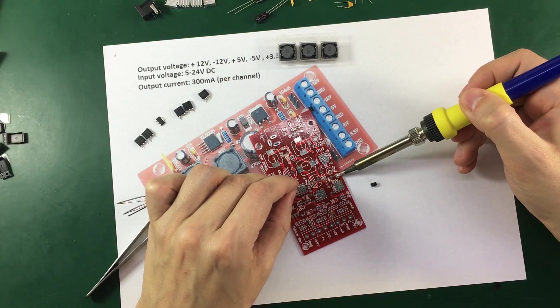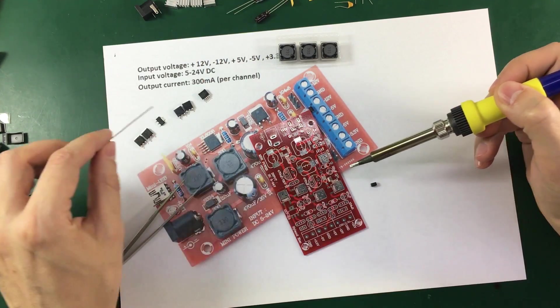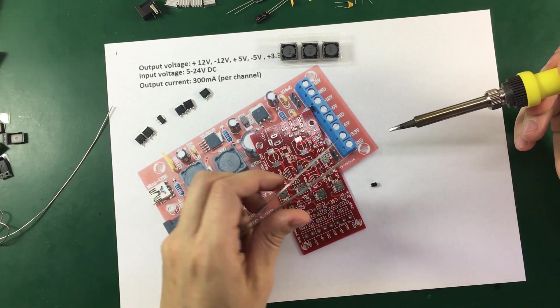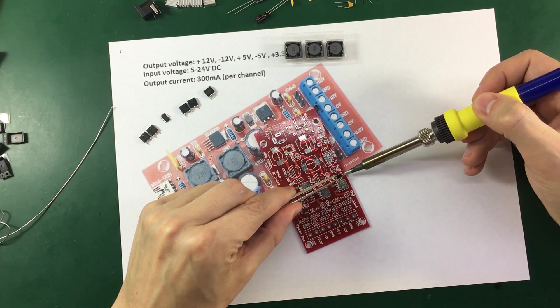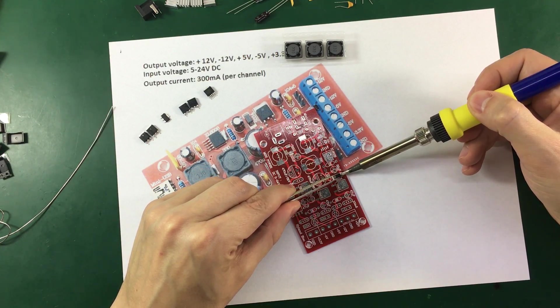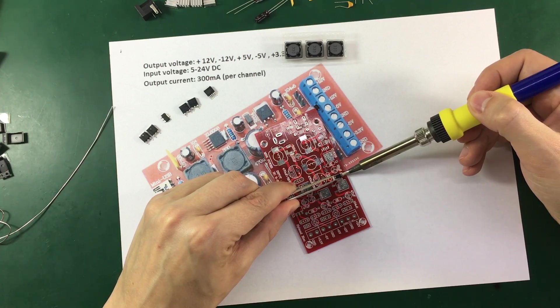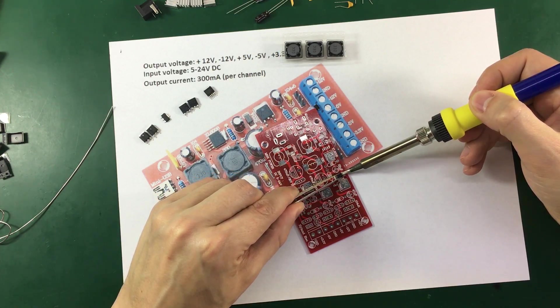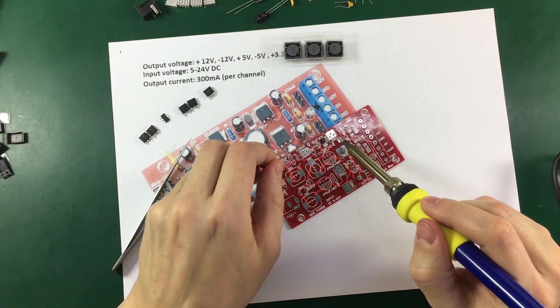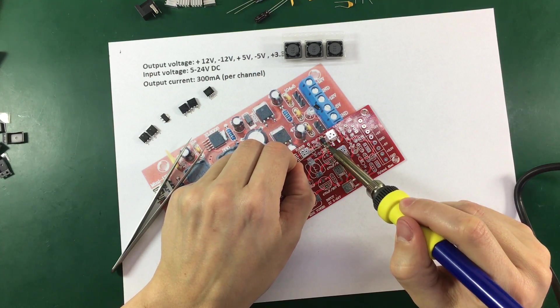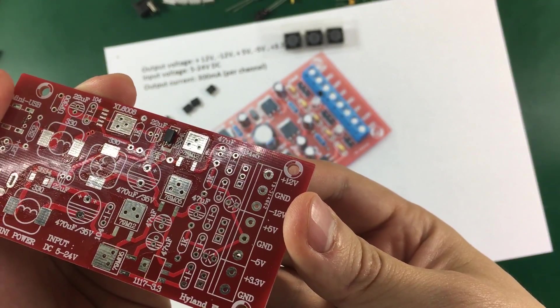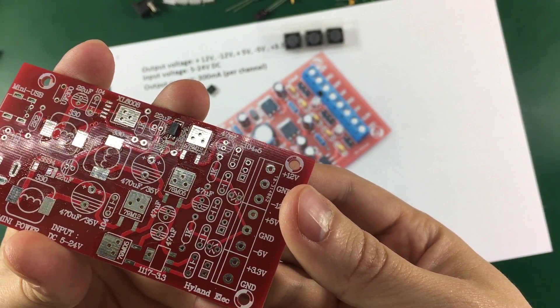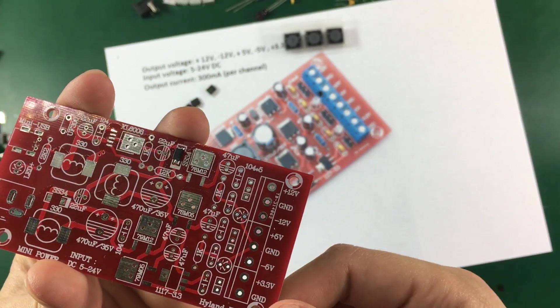First of all I'm going to put some solder on this pad, just a bit of solder. Then I'll take the diode and sit it on the correct location. Then all I need to do is solder the other pad. And remember the polarity matters a lot with these diodes so please make sure you put them in the right way around.